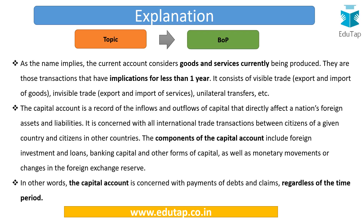The balance of payments can be categorized into two parts: the current account and the capital account. The current account is further divided into two parts — balance of trade, meaning trade in goods, and balance of invisibles, which includes services and remittances. Under the capital account, components include foreign investment, loans, external borrowings, NRI deposits, etc.